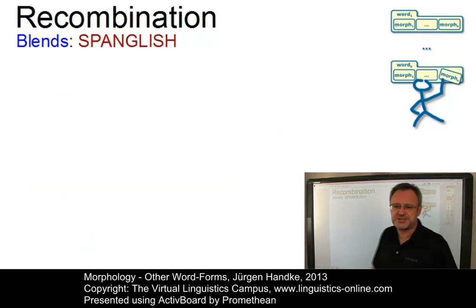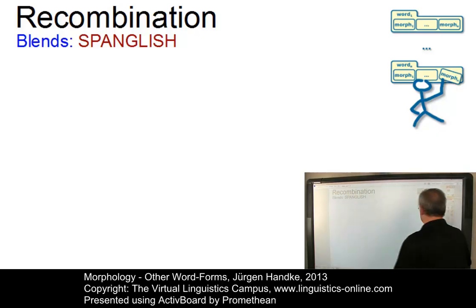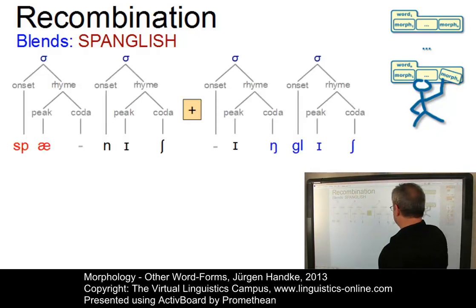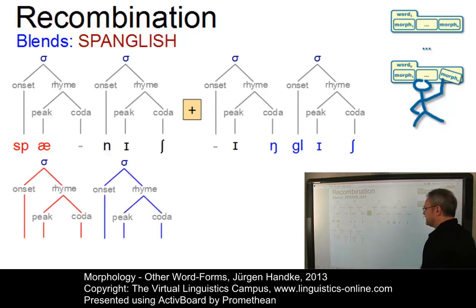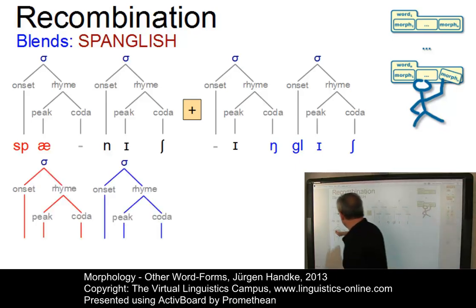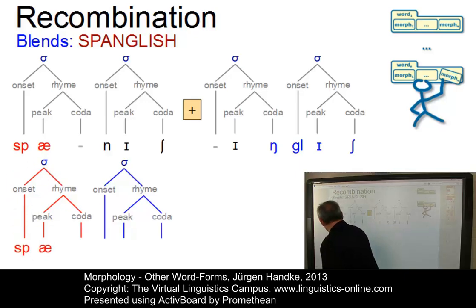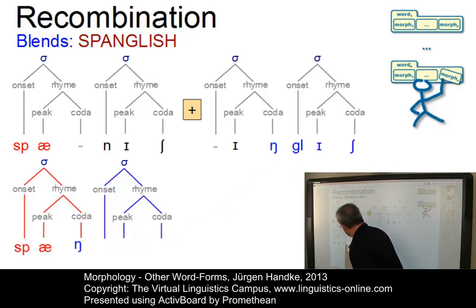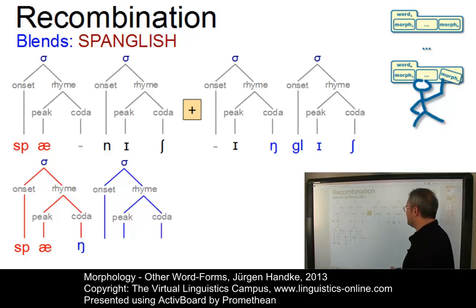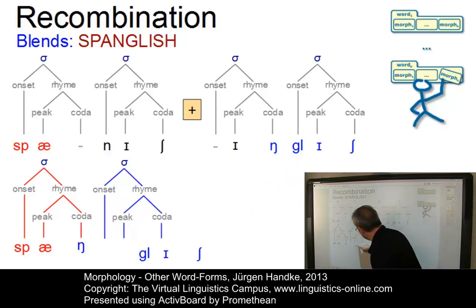In 'Spanglish' we have a mixed case. Again, looking at the syllable structures — here we have two items that consist of two syllables each. In the first resulting syllable, there is a combination of onset and peak taken from the first item and the coda taken from the second item, giving us 'Spang'. Then we add an entire syllable to get 'Spanglish'.